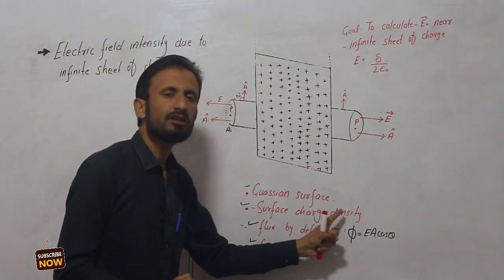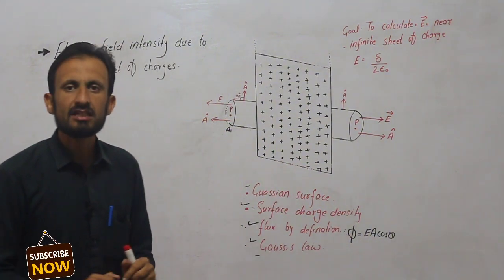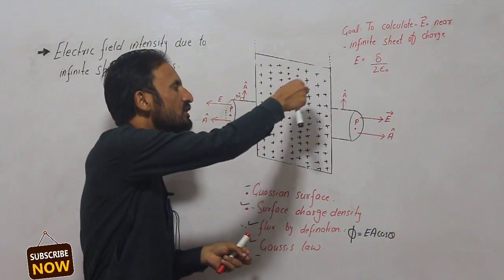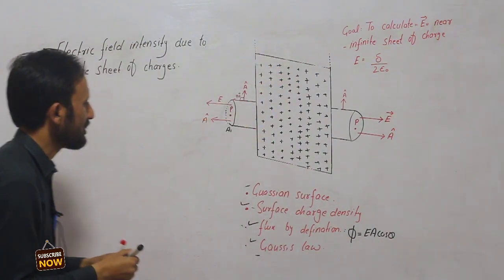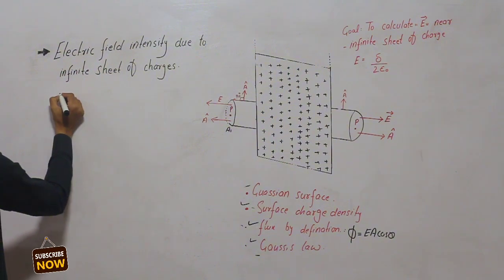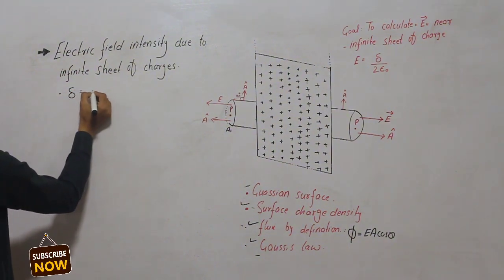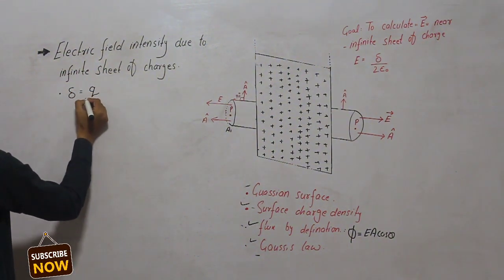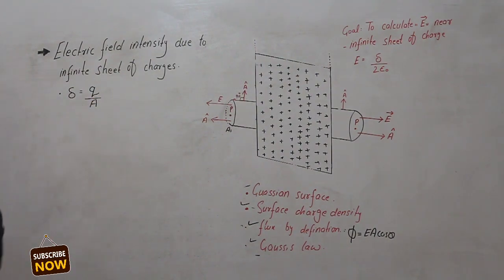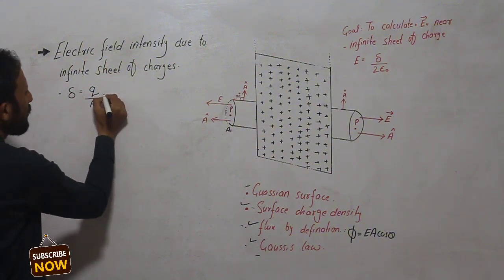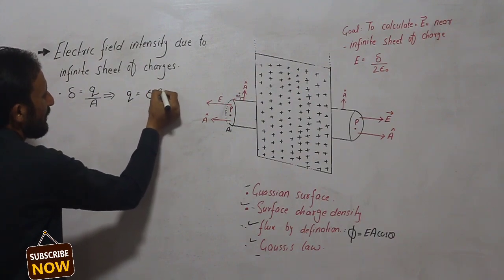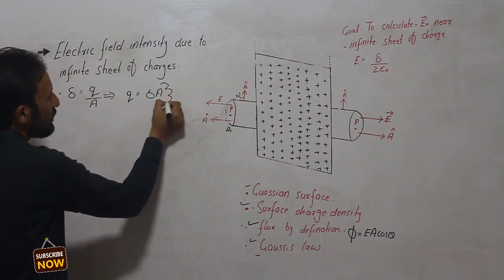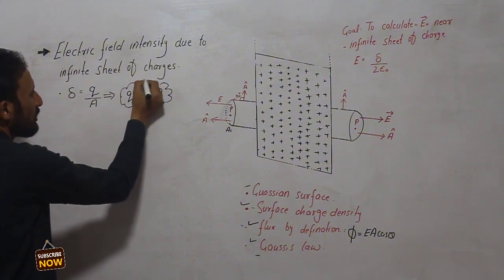You can see the surface charge density. If the charge is distributed on the surface, then the surface charge density is sigma. The sigma represents the charge per unit area. The charge Q enclosed is equal to sigma times A, where A is the area of the cross-section.